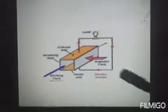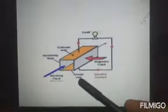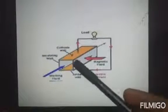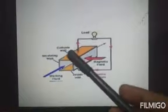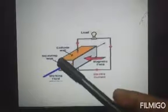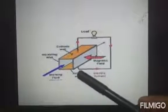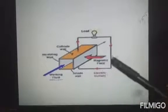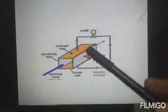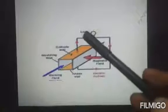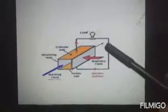This is a diagram showing the components: anode wall, cathode wall, insulating wall, working fluid, electrical current, magnetic field, and load.